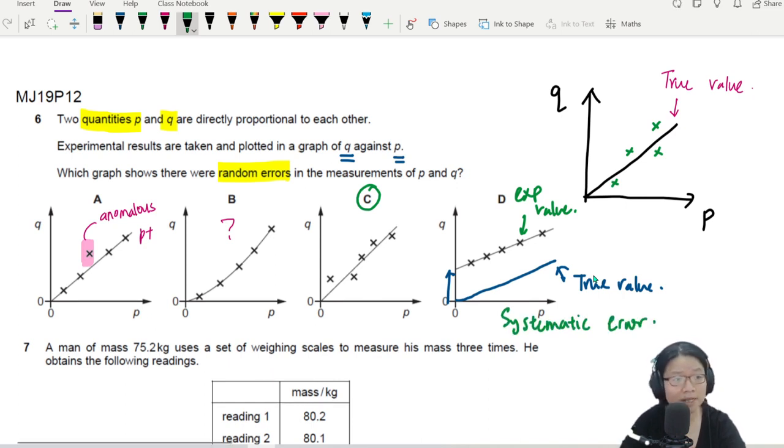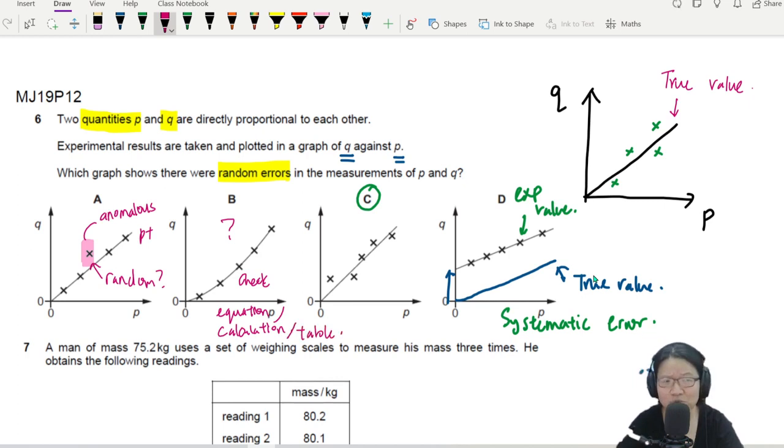So I repeat. A is anomalous point. Is it random? Yes. But only random for this point. The other points are okay. B, I don't know what happened. Maybe check equation. Maybe plot wrong graph now. Maybe got calculation problem. I don't know. Maybe supposed to square something but didn't square. Check equation calculation table. So I guess this is also human error.